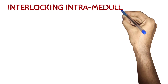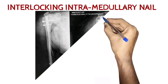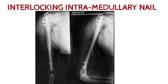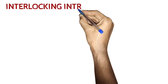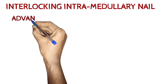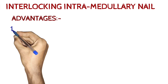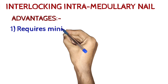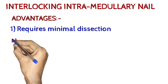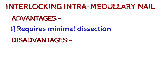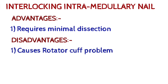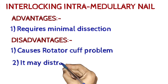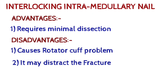Interlocking intramedullary nail: Advantages include that it requires minimal dissection. Disadvantages include that it causes rotator cuff problems and may distract the fracture.